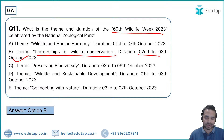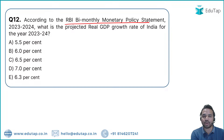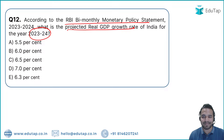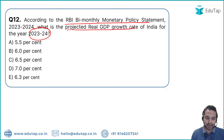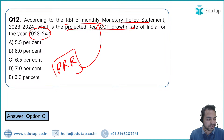Question 13: From the RBI bi-monthly monetary policy statement held 6th–8th October, what is the projected real GDP growth rate of India for 2023–24? The answer is 6.5%. The policy repo rate as per the same statement also remained at 6.5%.